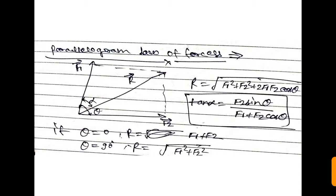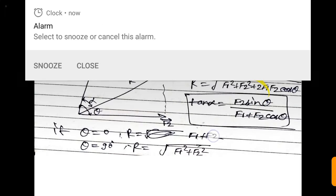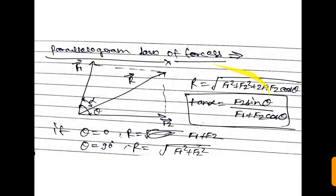The angle between F1 and F2 is θ, and the angle between F1 and the resultant is α. To calculate α, the angle between the resultant and a force component, we use: tan α = (F2·sinθ) / (F1 + F2·cosθ). Remember these two formulas for calculating the resultant and the value of α.